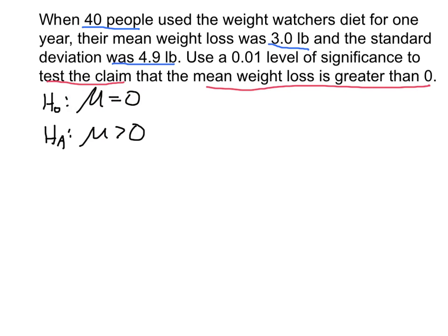I need to find the test statistic and the critical value. The level of significance is 0.01. This is a right-tail test, because I'm talking about a mean greater than zero. So here is my critical value — with a level of significance of .01, that's the area to the right of this critical value.